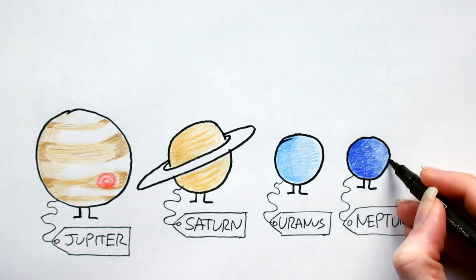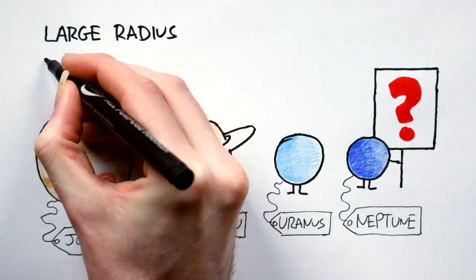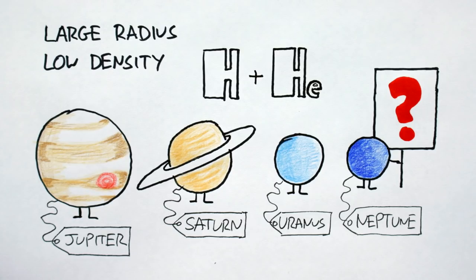Our solar system has four gas giants, right? Okay, but if by gas giant you mean a large-radius, low-density planet composed primarily of hydrogen and helium, then no. To explain, first some similarities and differences.